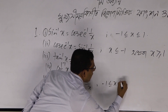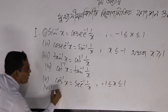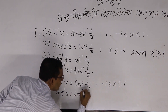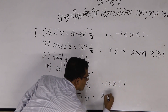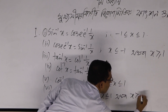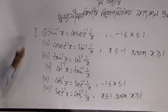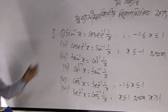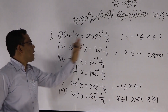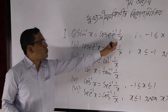For x between minus 1 and 1, we can write: sec inverse x equals cos inverse 1 by x, where the magnitude of x is greater than or equal to 1. So the first group of formulas: sin inverse x equals cosec inverse 1 by x, and cosec inverse x equals sin inverse 1 by x.